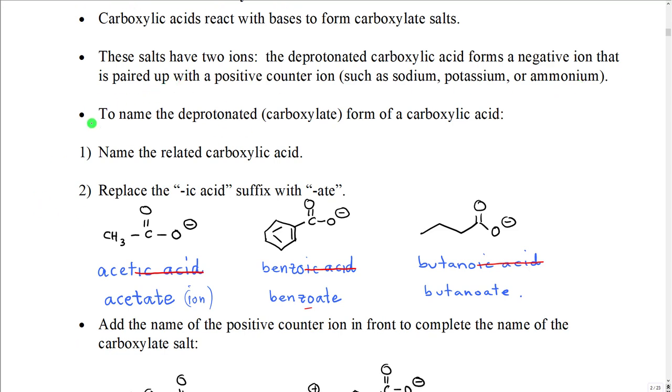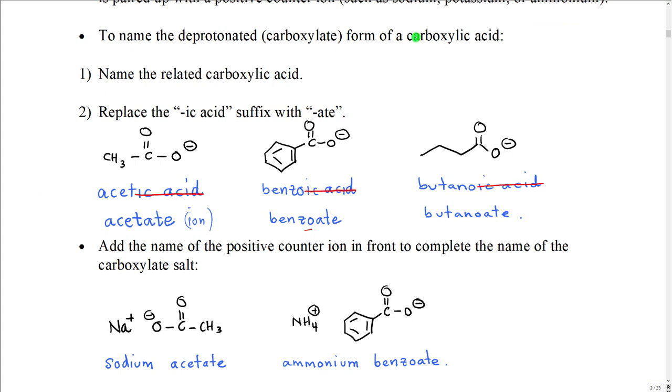To name this, what we do is we start by naming the carboxylic acid. We then take off the '-ic acid' ending of the carboxylic acid name and we replace it with '-ate'. For example, this is the deprotonated form of acetic acid, so we would start with the name acetic acid, we would cross out the '-ic acid' and we would add '-ate' on the end, and then actually to be technically correct we would call this acetate ion because it's a negatively charged ion.